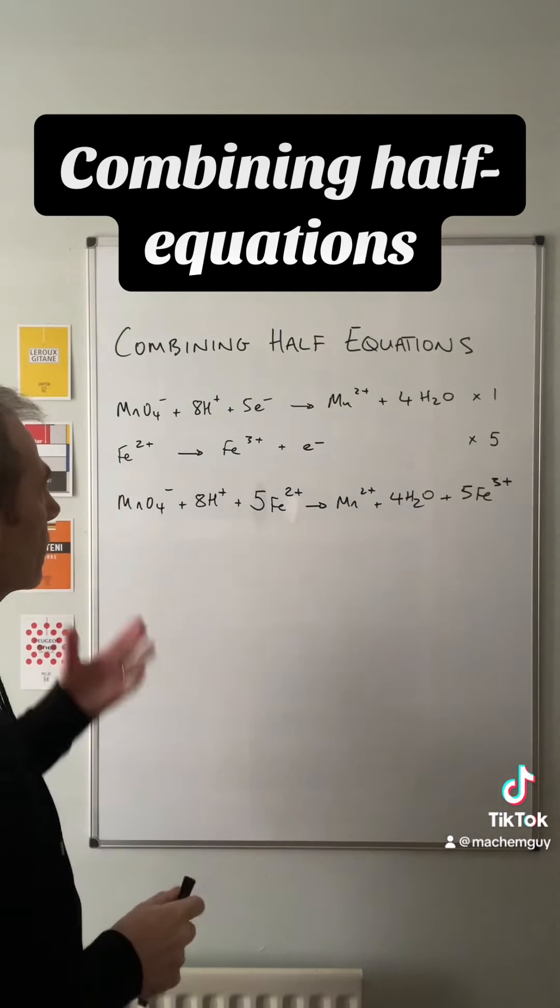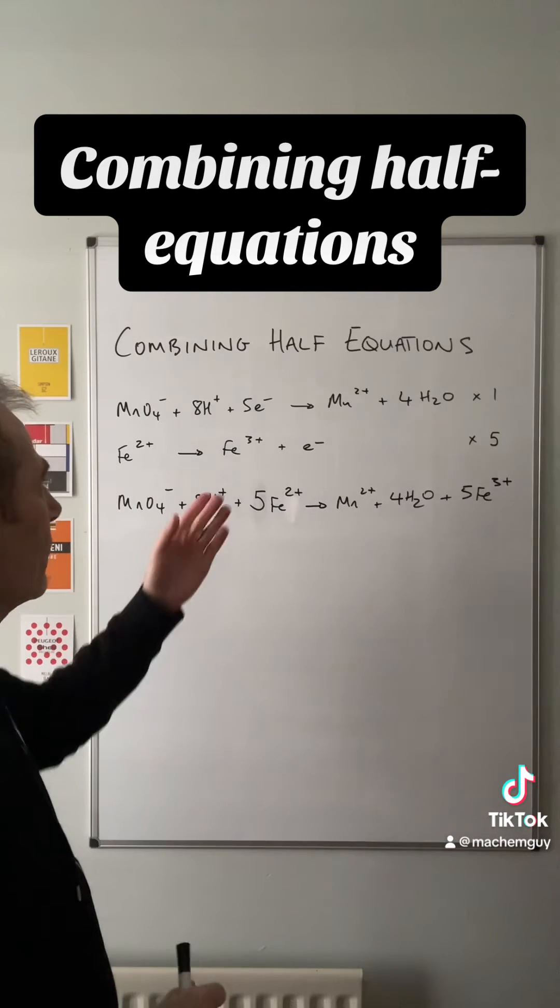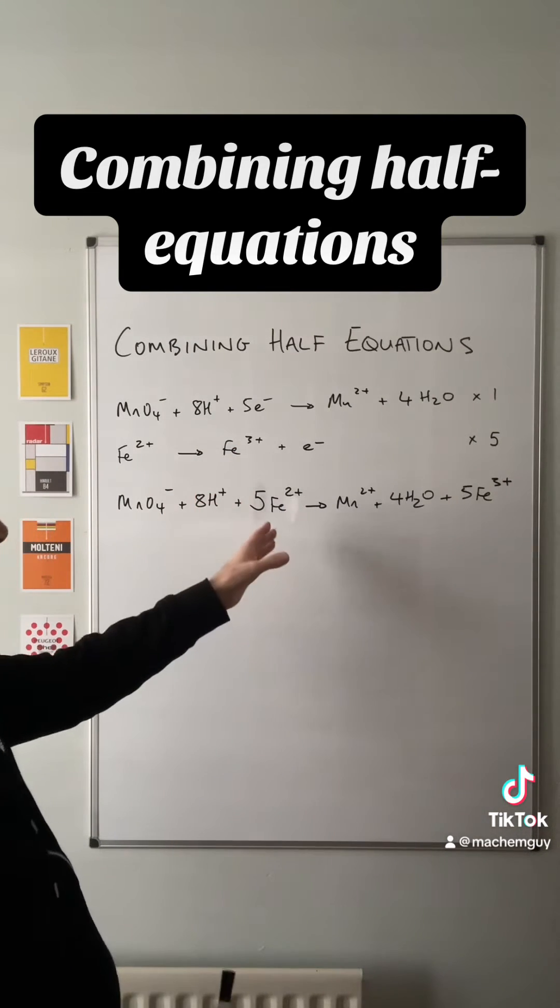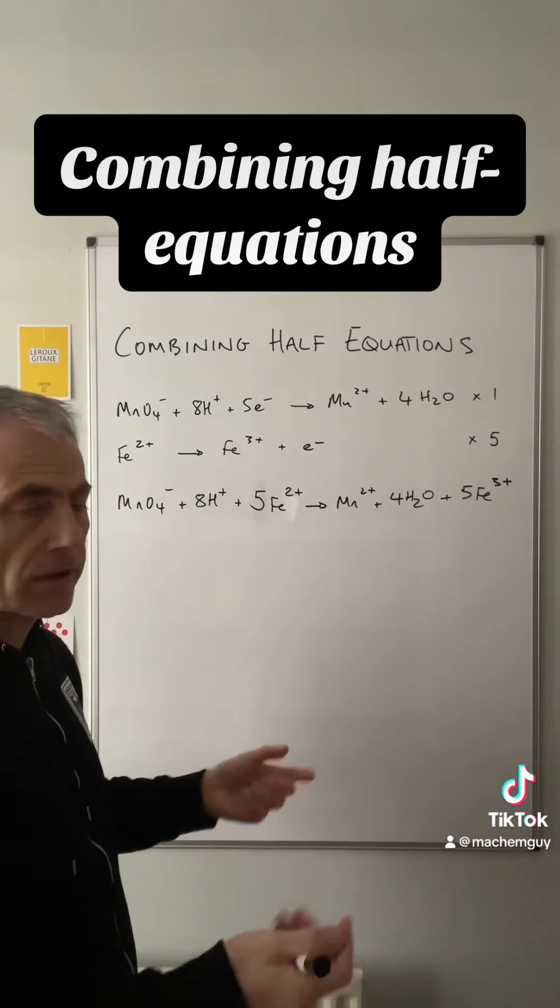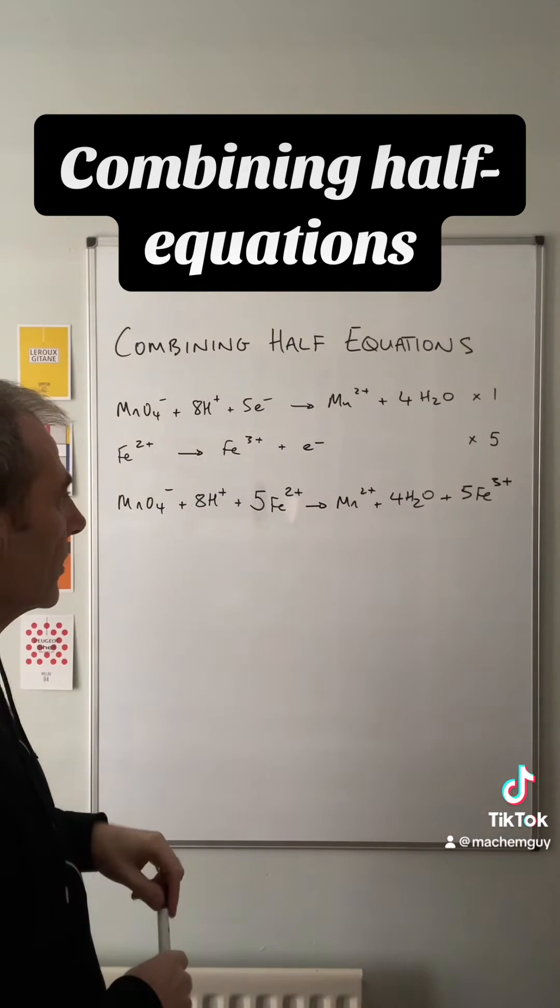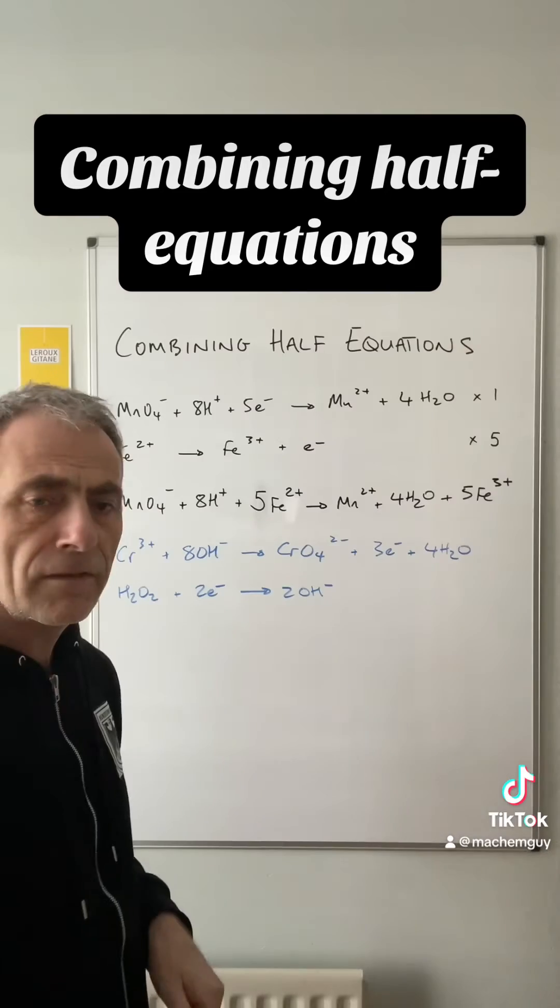So the overall redox reaction looks like that. I haven't bothered putting the electrons in because we would have had five on the left and five on the right, so they're obviously going to cancel. So I didn't bother writing them in. We'll have a look at one more.